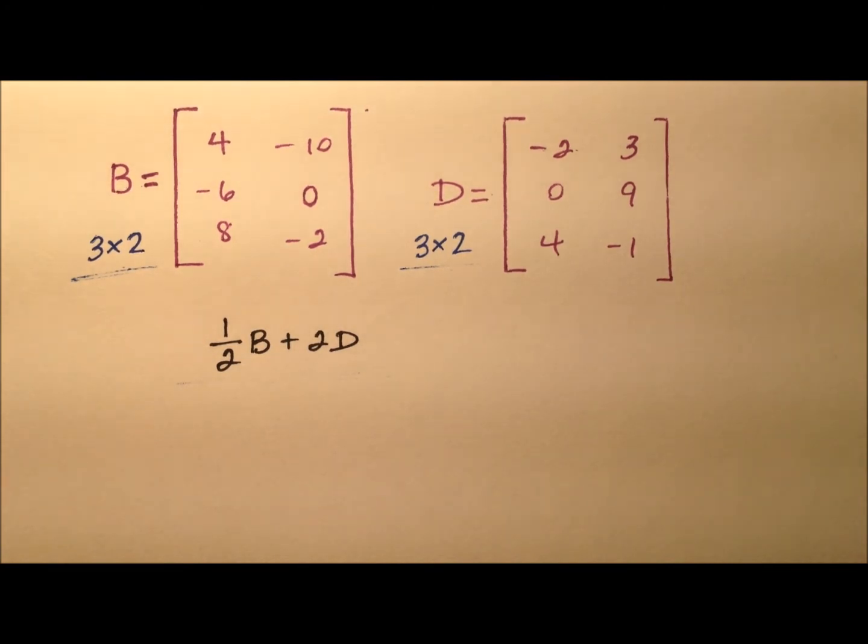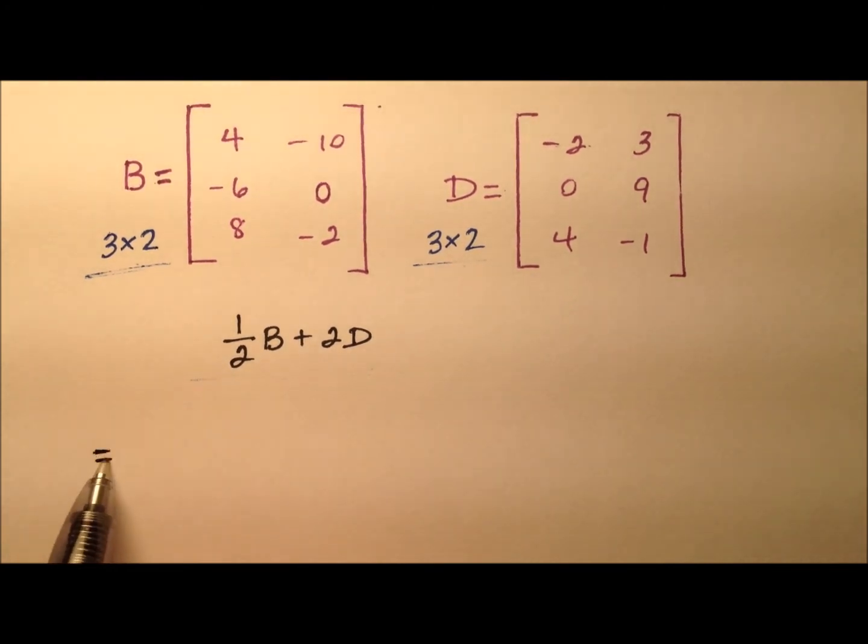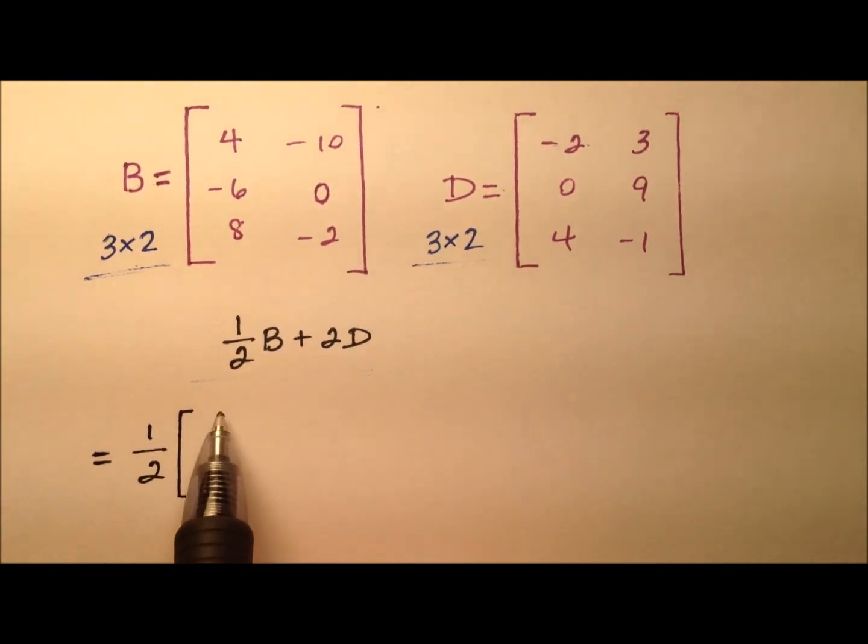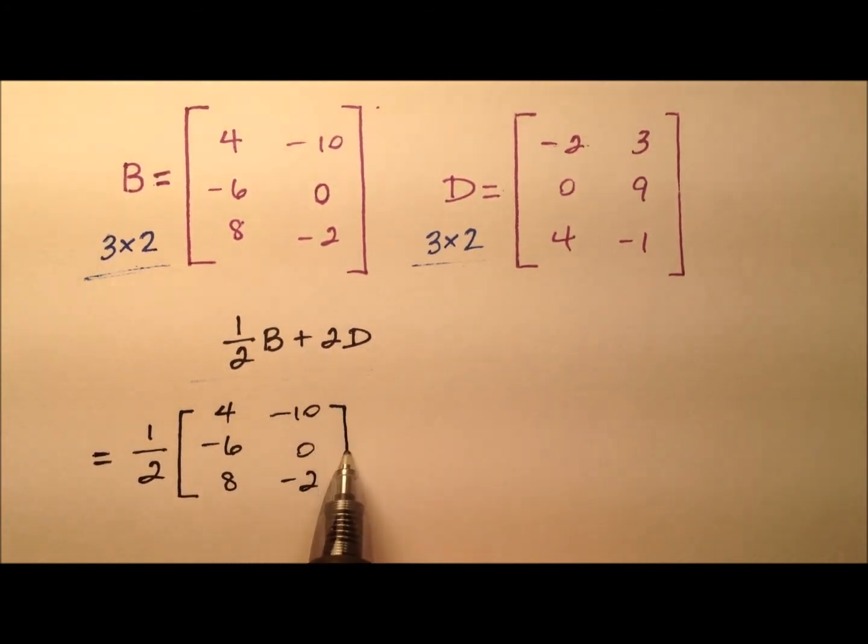All right, so let's go ahead and start by writing this out. So we're going to take 1 half of, or do a scalar multiplication for 1 half, and we'll have 4, negative 6, and 8, and negative 10, 0, and negative 2. And those are those entries from matrix B.